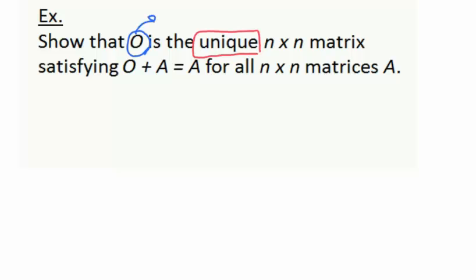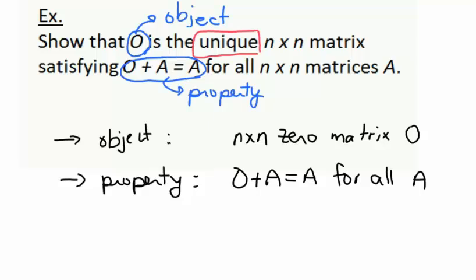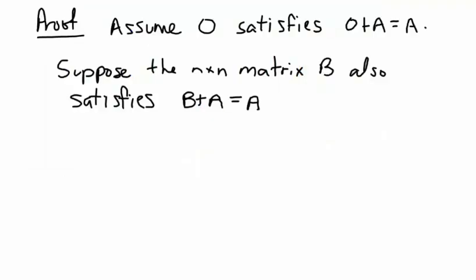Our zero matrix O is the object X — the object we're trying to show is unique. The special property it has is given by the equation O plus A equals A for all n by n matrices. So our object is the n by n zero matrix, and the special property is O plus A equals A.